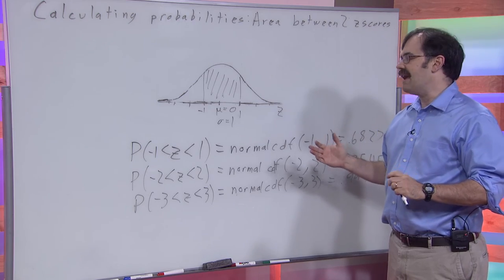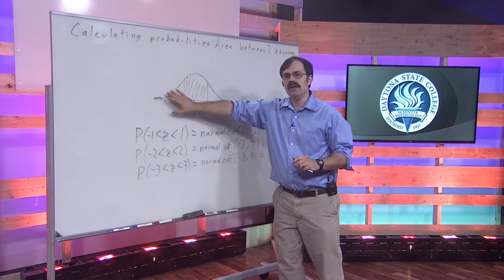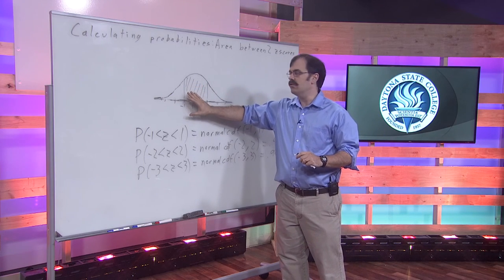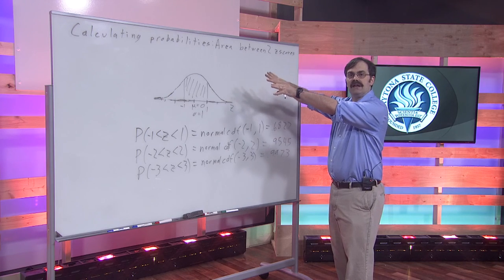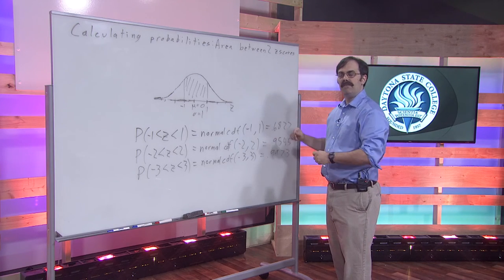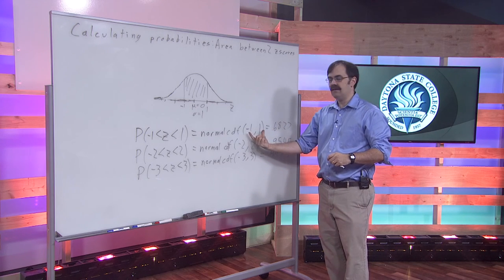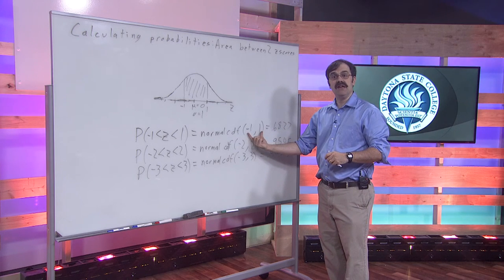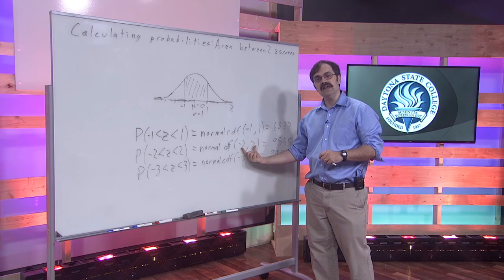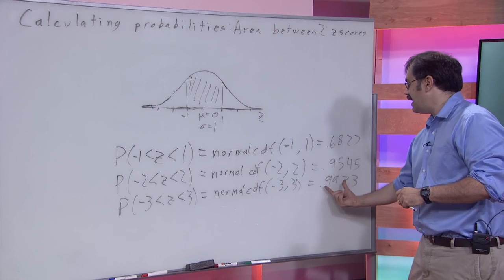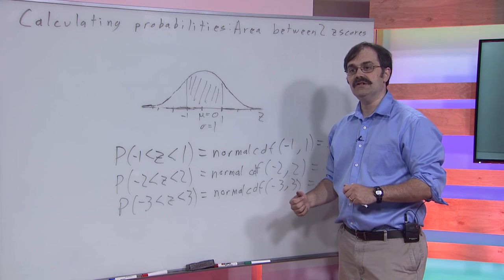When you look at that, that should remind you of something we talked about a long time ago when we were talking about the empirical rule. It said that 68% of your data land within one standard deviation of the mean, 95% land within two standard deviations of the mean, 99.7% land within three standard deviations of the mean. This is where those numbers came from that we talked about back in unit one.